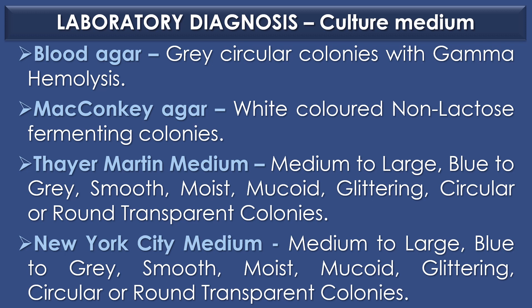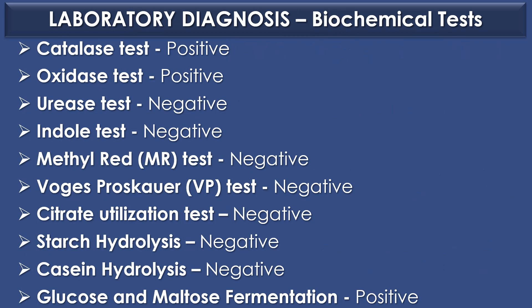In New York City medium, Neisseria meningitidis shows medium to large, blue to gray, smooth, moist, mucoid, glistening, circular or round transparent colonies. Biochemical tests: Catalase test — positive; Oxidase test — positive; Urease test — negative; Indole test — negative; Methyl Red (MR) test — negative; Voges-Proskauer (VP) test — negative; Citrate utilization test — negative; Starch hydrolysis — negative; Casein hydrolysis — negative; Glucose fermentation and maltose fermentation — positive.